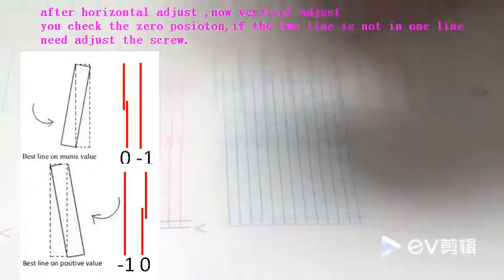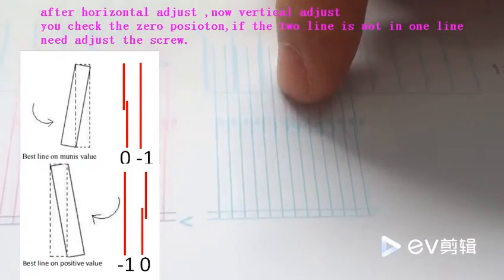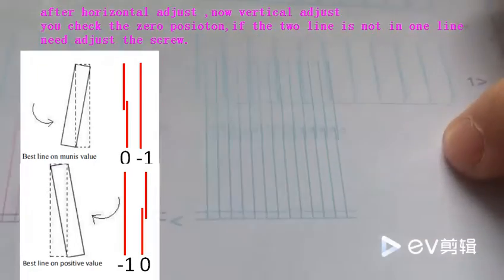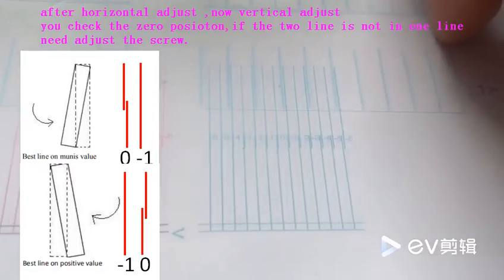And you need to, in the zero position, need two lines to be one line. If not, need to adjust the print hand direction.